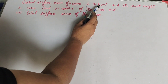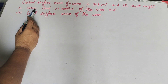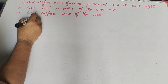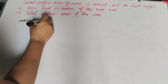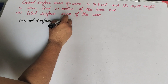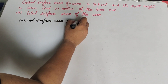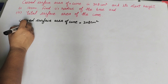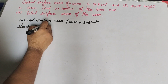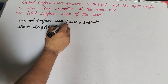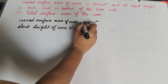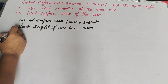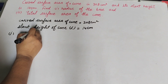In this question, given is the curved surface area of the cone and the slant height. We find the radius of the base. Curved surface area of cone = 308 cm² and slant height of cone = 14 cm.